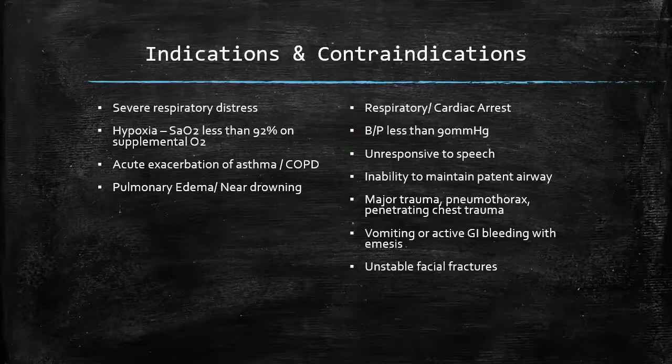We don't necessarily need a full systolic and diastolic blood pressure. If we get to a patient who is really having a hard time breathing, it's essential that we get going quickly. What I'm really looking for is a systolic blood pressure, which you can easily get with a palpated blood pressure — a systolic of 90 or above and we're golden. A patient who is unresponsive to speech is going to be contraindicated for CPAP.